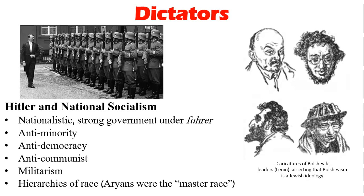Then we have Adolf Hitler. He was nationalistic, had a strong government, called himself the Führer, and was anti-minority, anti-democratic, and anti-communist. He was very pro-military and was a member of the military during World War I. He believed in a hierarchy of race, using the term Aryans as the so-called master race. We will go over propaganda pieces in class — both theirs and the U.S.'s — including terrible caricatures of Bolshevik leaders asserting that Bolshevism was a Jewish ideology. There are plenty of films I can suggest. Many of you already have background knowledge of Hitler.